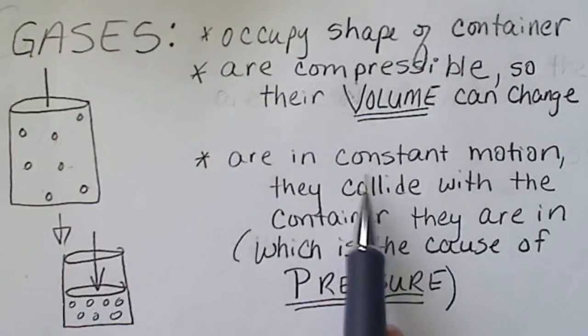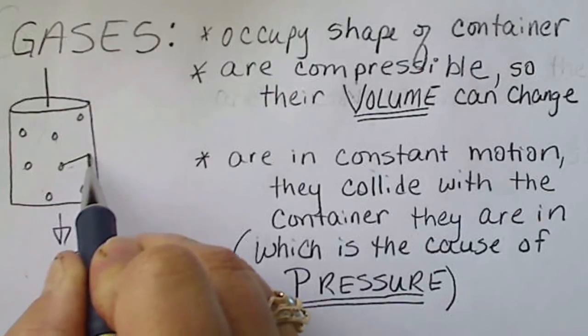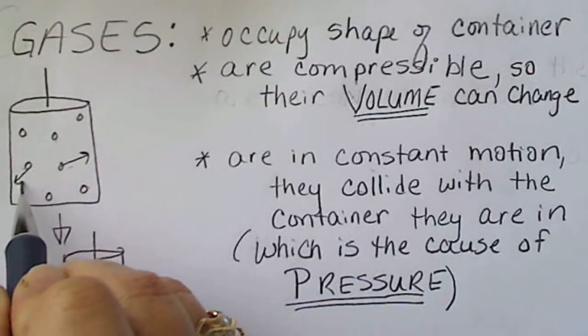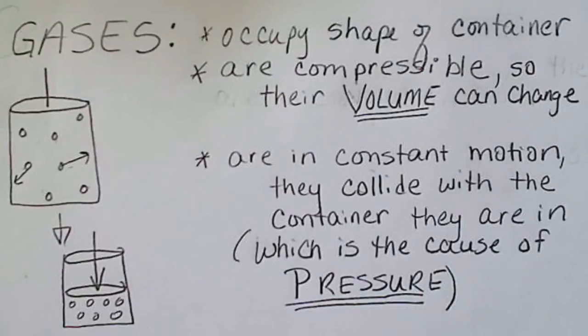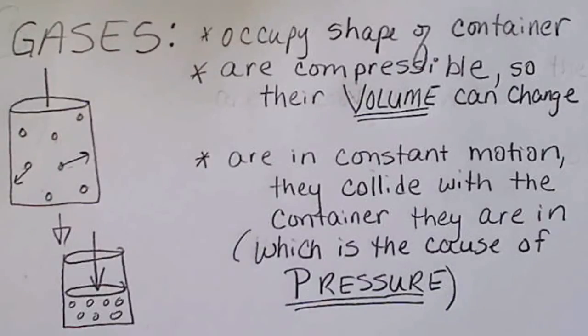Since a gas is in constant motion, these gas molecules are flying around at approximately a thousand miles per hour at normal room temperature. When a gas hits the side of a container, that's exactly what causes the pressure.